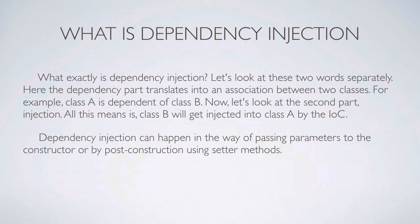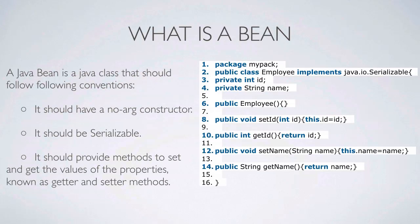We'll look at an example of that shortly. But first, let's look at a Spring-specific dependency injection implementation. So what is a bean? A Java bean is a Java class that should follow certain conventions: it should have a no-arg constructor, it should be serializable by implementing Serializable, and it should provide getter and setter methods for its properties.